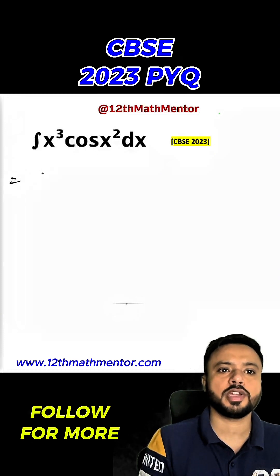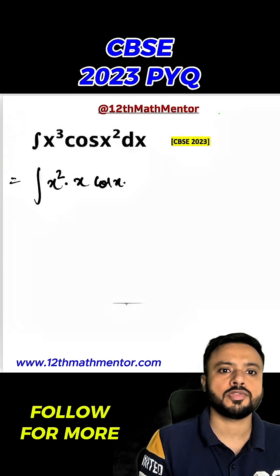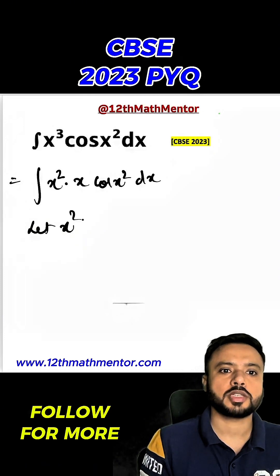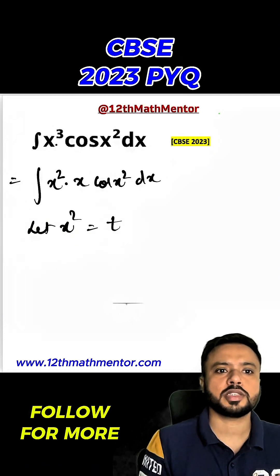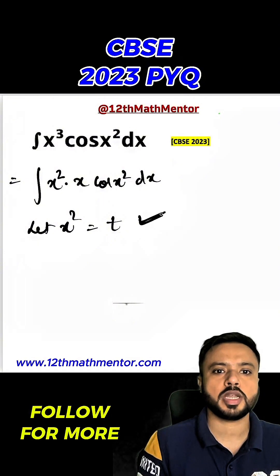So before we start solving it, I need to write this x³ as x² times x times cos²x dx. Now I'm going to assume x² as t. The purpose behind writing x³ as x² times x is because I have to use the substitution x² equals t.